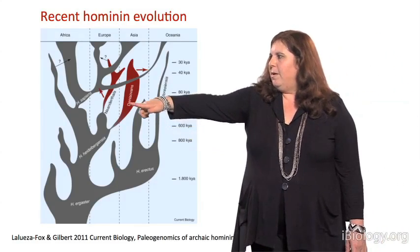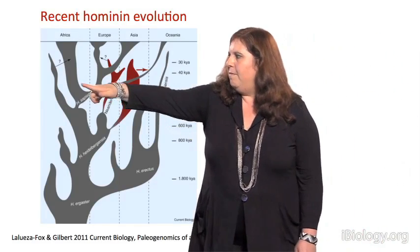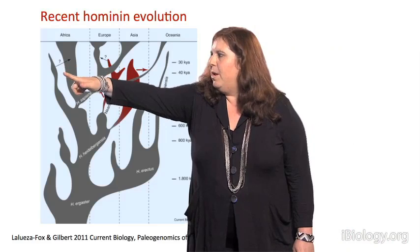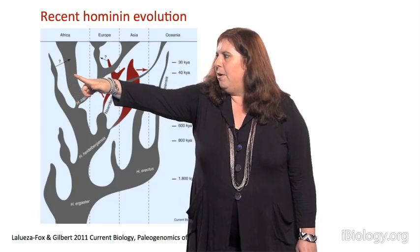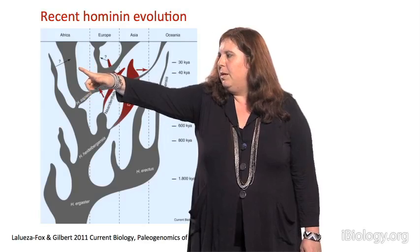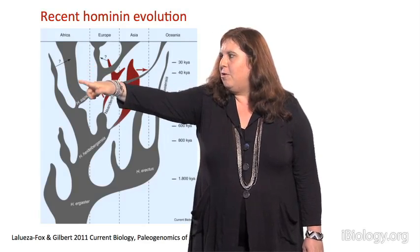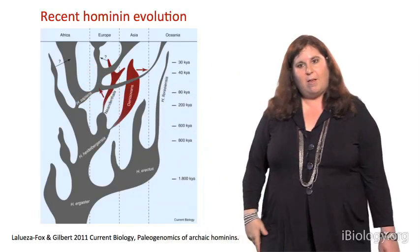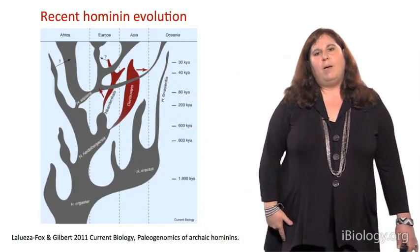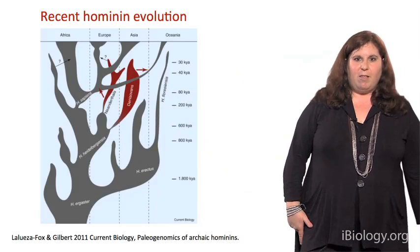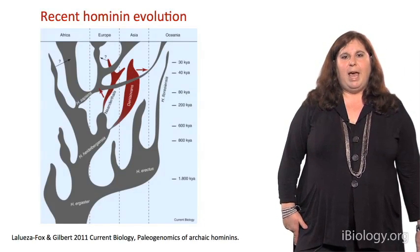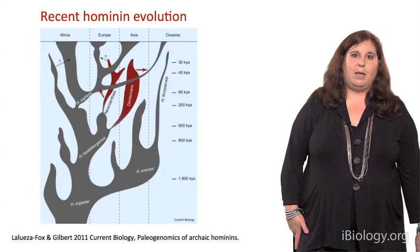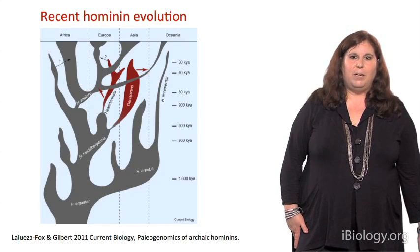We still don't know exactly how much admixture there may have been between archaic species and modern humans in Africa, but there's some preliminary data suggesting this occurred there as well. The problem is that fossils don't preserve as well in Africa, so we don't have any DNA sequences from archaic lineages in Africa at this point.